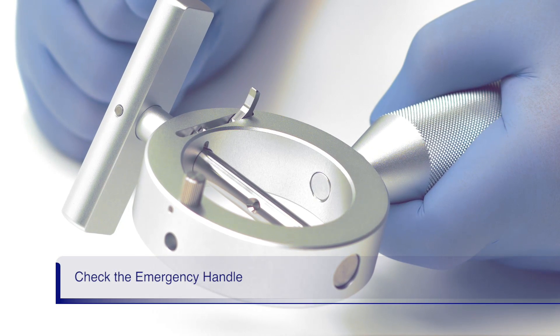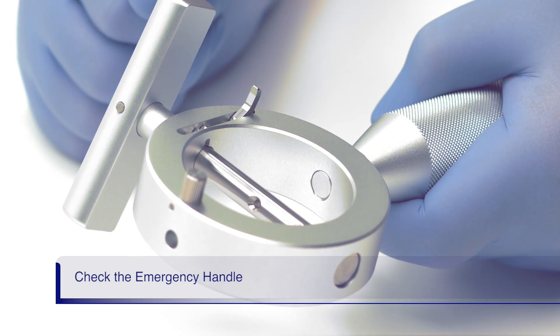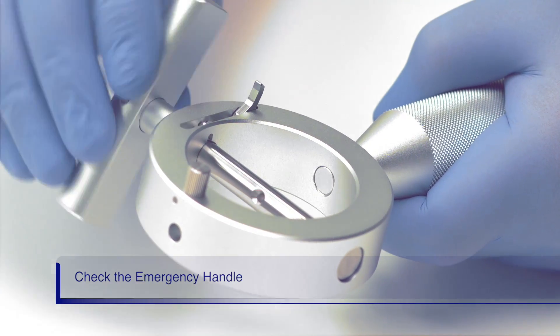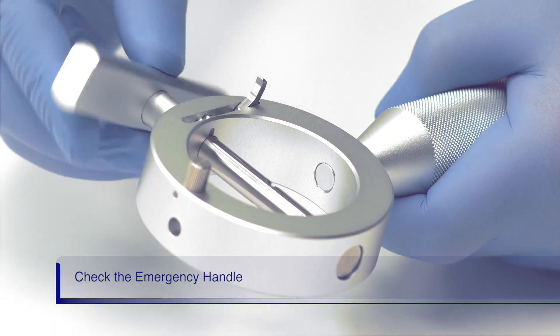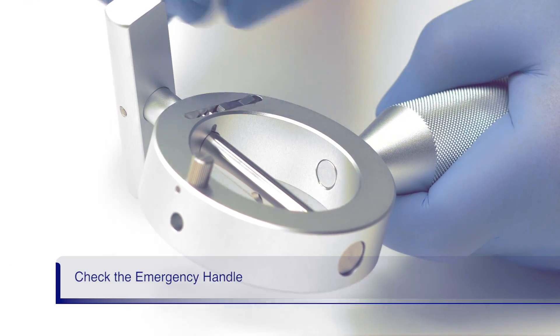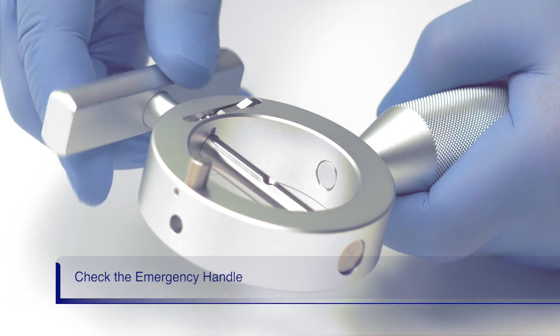Before using the emergency lithotriptor handle, ensure that the rotatable bar can freely turn and confirm the ratchet lock works by engaging and disengaging it at the handle bar.